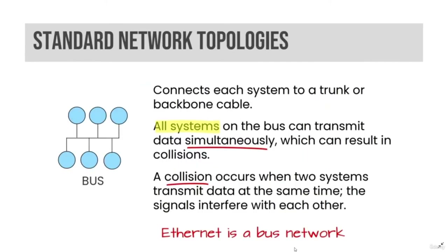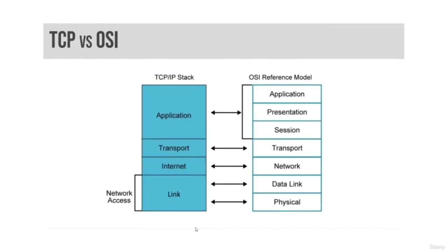A bus network topology connects each system to a trunk or backbone cable. All systems on the bus can transmit data simultaneously, which can result in collisions. A collision occurs when two systems transmit data at the same time and the signals interfere with each other. Ethernet is an example of a bus network.